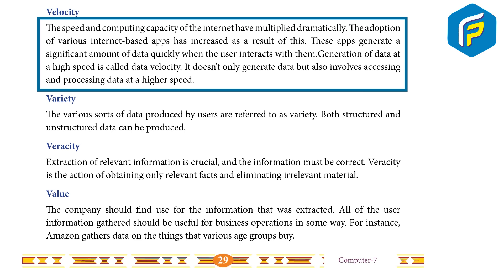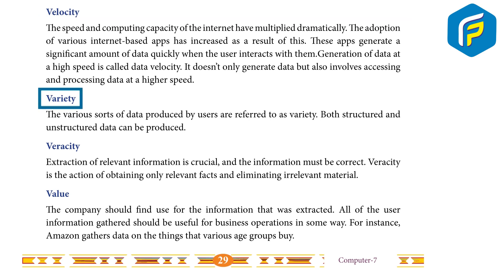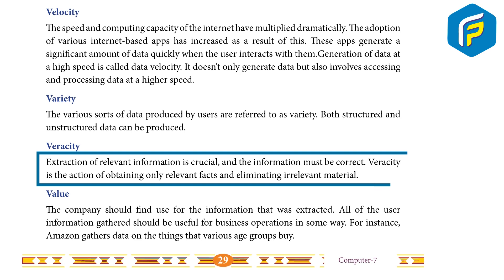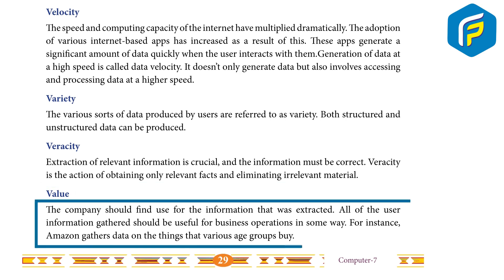Generation of data at a high speed is called data velocity. It does not only generate data but also involves accessing and processing data at higher speed. Variety: the various sorts of data produced by users are referred to as variety — both structured and unstructured data can be produced. Veracity: extraction of relevant information is crucial and the information must be correct; veracity is obtaining only relevant facts and eliminating irrelevant material. Value: the company should find use for the extracted information; all user data gathered should be useful for business operations.